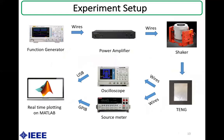Next is the experiment setup. A function generator was connected to a shaker via a power amplifier. The fabricated nanogenerator was mounted with one electrode attached to the shaker and the other electrode mounted on a 3D-printed stand. The shaker was used to apply vibrations on the nanogenerator with different force and frequency. The nanogenerator was connected to a digital oscilloscope and source meter for monitoring voltage and current.